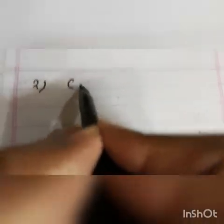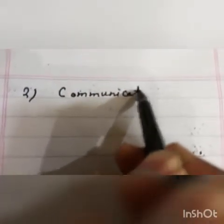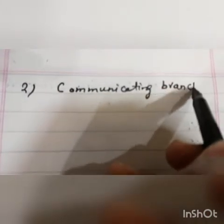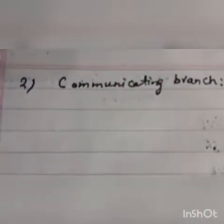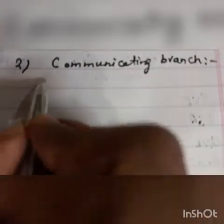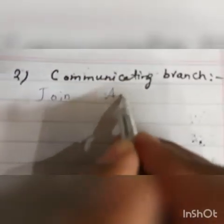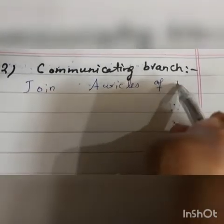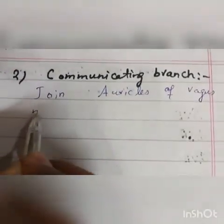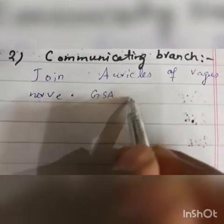The second branch is the communicating branch. The communicating branch has its role in joining the auricular branch of the vagus nerve, which is cranial nerve number ten, and provides general somatic afferent fibers.